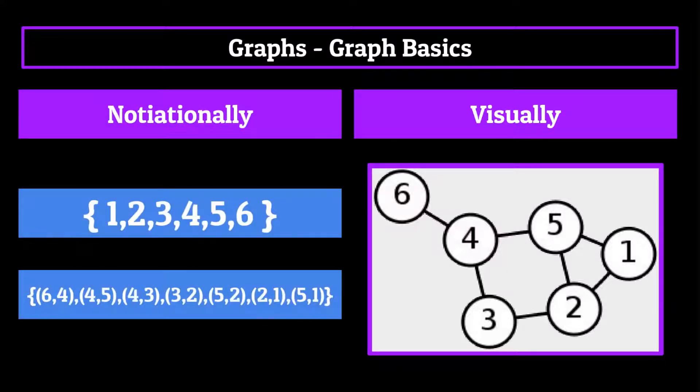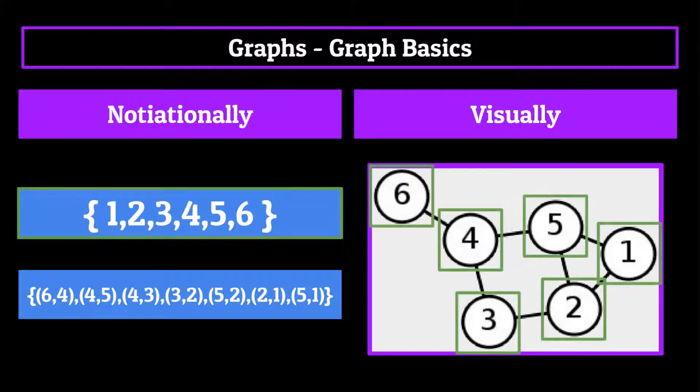But notation wise, a graph actually looks like this, which is much harder to visualize. So let's break it down. First, we have the vertices set, which contains a comma separated list of all vertices within the graph. Each comma separated value represents a node within the graph.